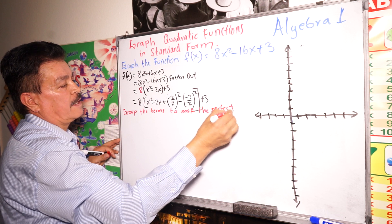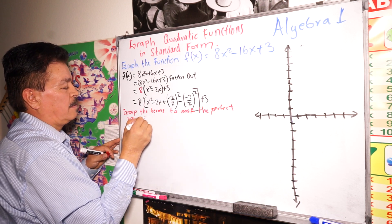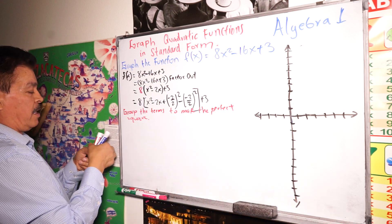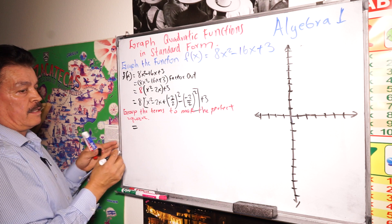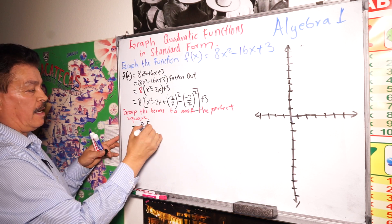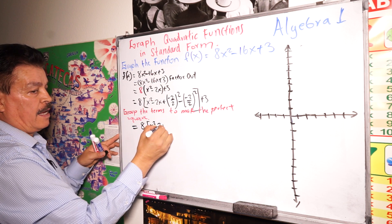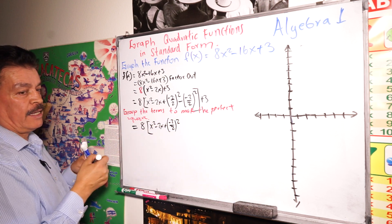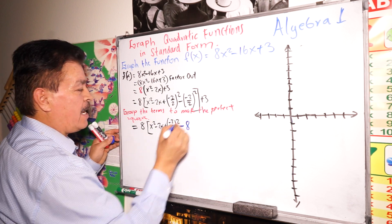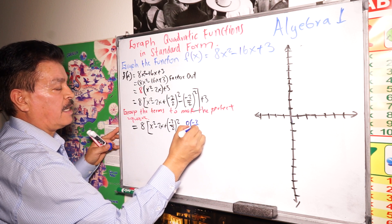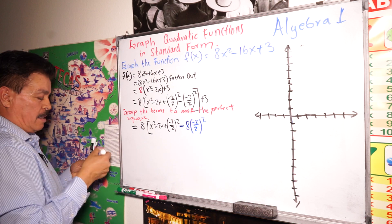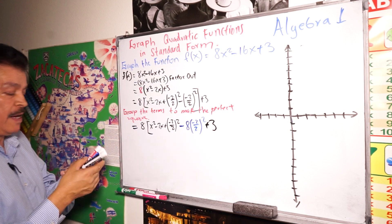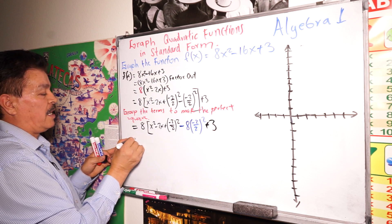Now we group the terms to make a perfect square. It equals 8 times (x squared minus 2x plus (negative 2 divided by 2) squared), then we subtract 8 times (negative 2 divided by 2) squared to compensate for what we added, plus 3.